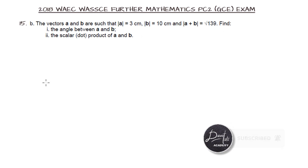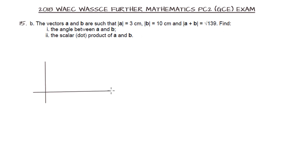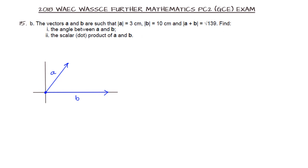Before we evaluate this, I would like to draw a representation of vectors a and b such that we have a plus b. The first thing that should come to mind is the parallelogram law of vectors, since we have vector a, vector b, and vector a plus b. If we note our Cartesian coordinates, with a and b inclined at an angle to each other, the vector a plus b can be denoted as the resultant of the two vectors.